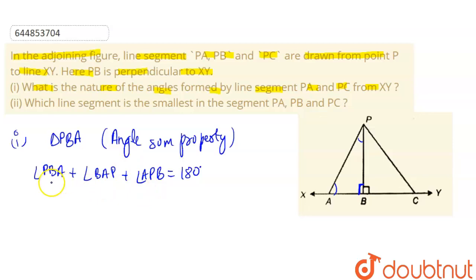So angle PBA is 90 degrees. So angle BAP plus angle APB is equal to 90 degrees, 180 minus 90. So both of these angles, if we add them up, then their sum is 90 degrees.